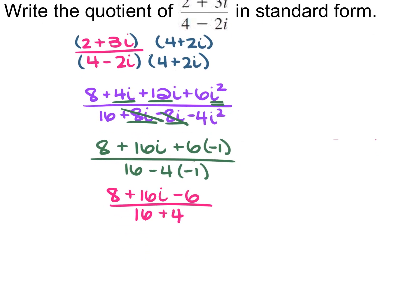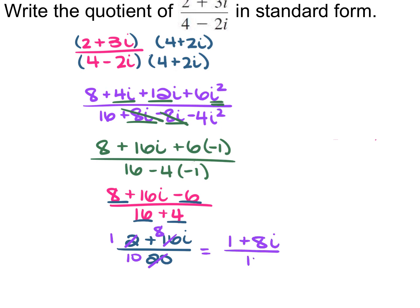We multiply that negative 1 by the 6 up top and by the negative 4 on the bottom. That gives us 8 plus 16i minus 6 over 16 plus 4. From here we combine like terms: up top, 8 minus 6 gives you 2 plus 16i. On the bottom, 16 plus 4 is 20. You need to simplify — your 2, your 16i, and your 20 are all divisible by 2. So 2 divided by 2 is 1, 16i divided by 2 is 8i, 20 divided by 2 is 10. That gives you 1 plus 8i all over 10.